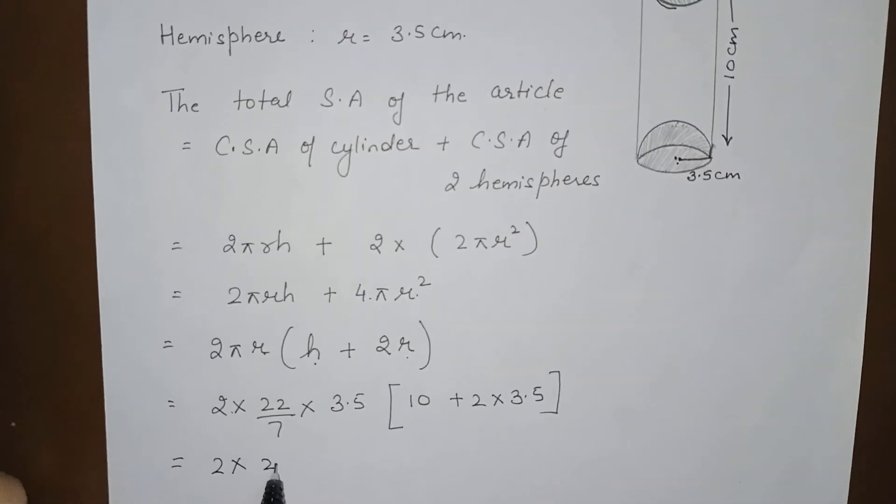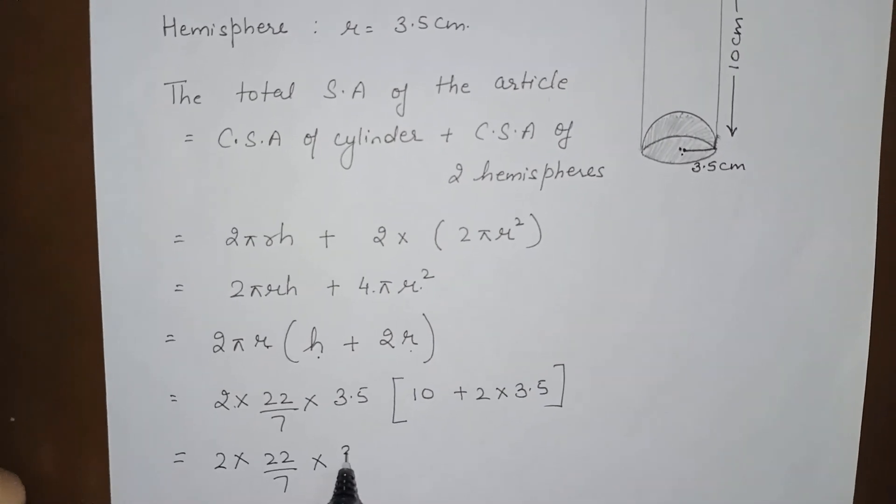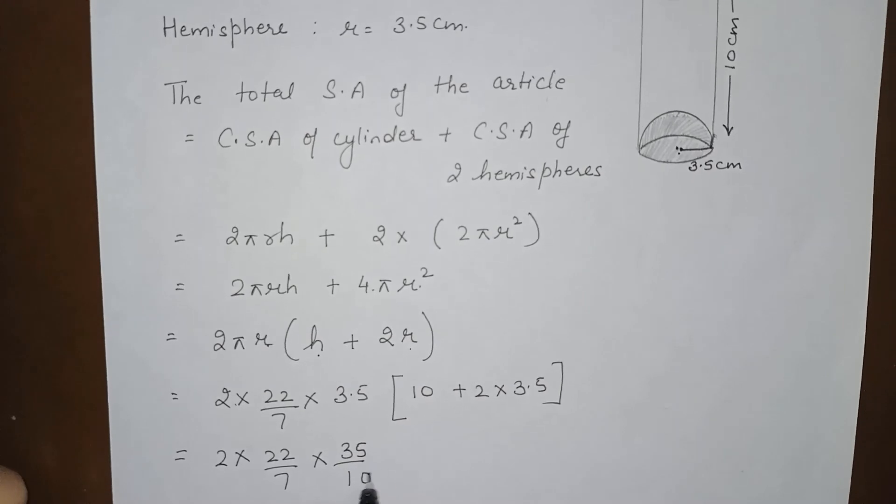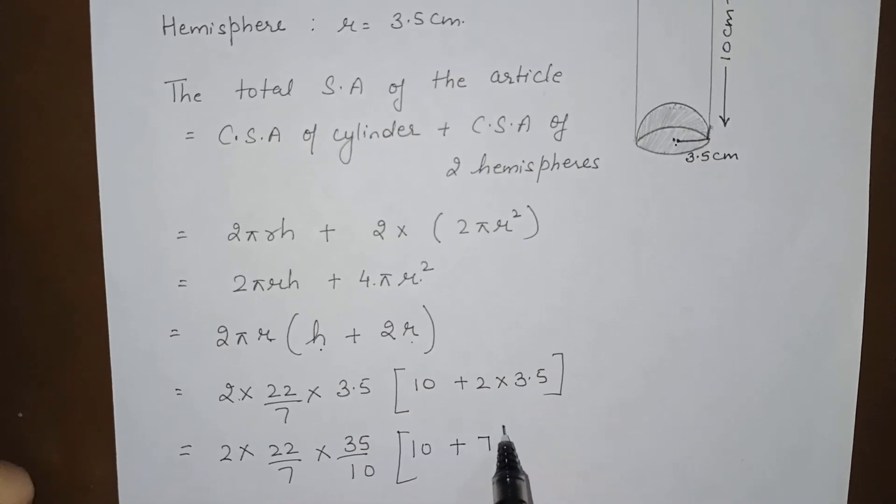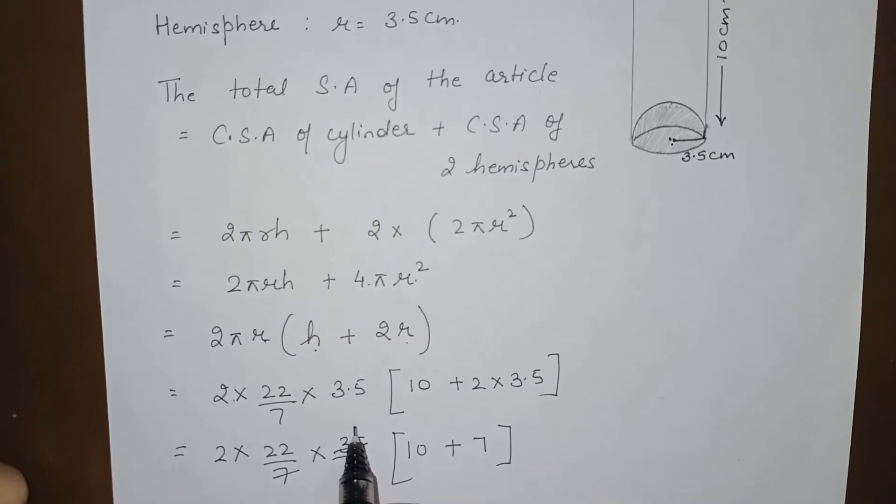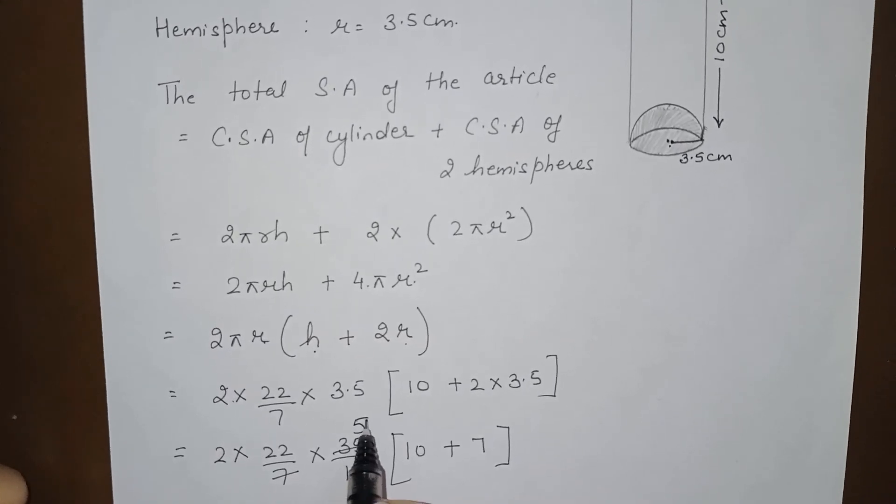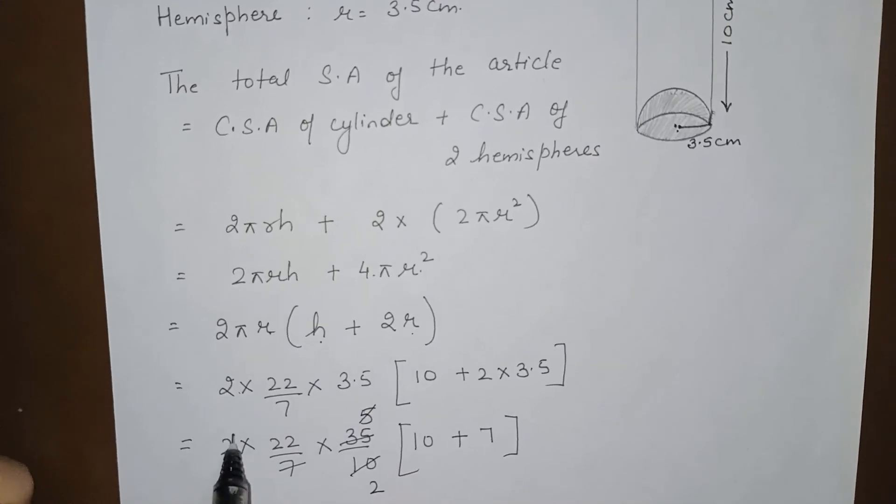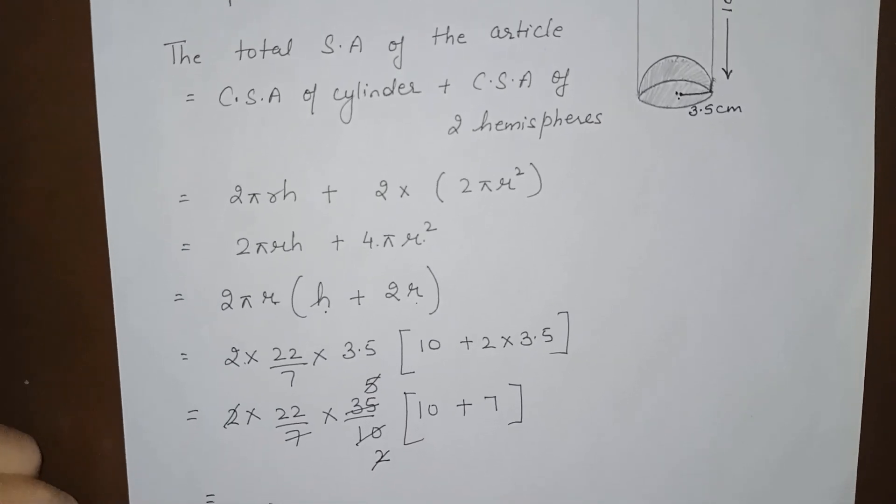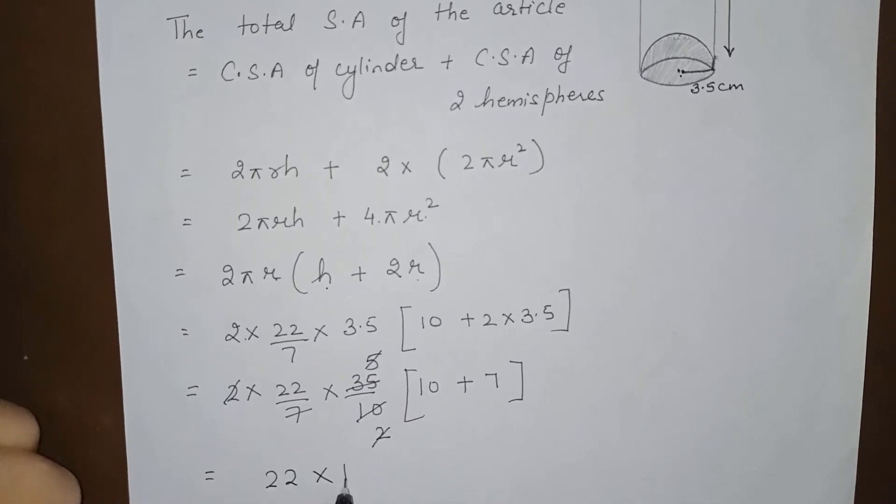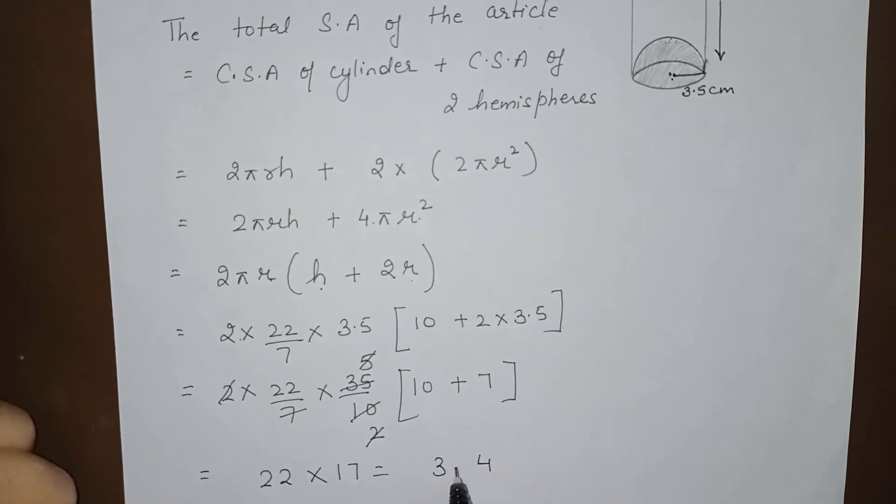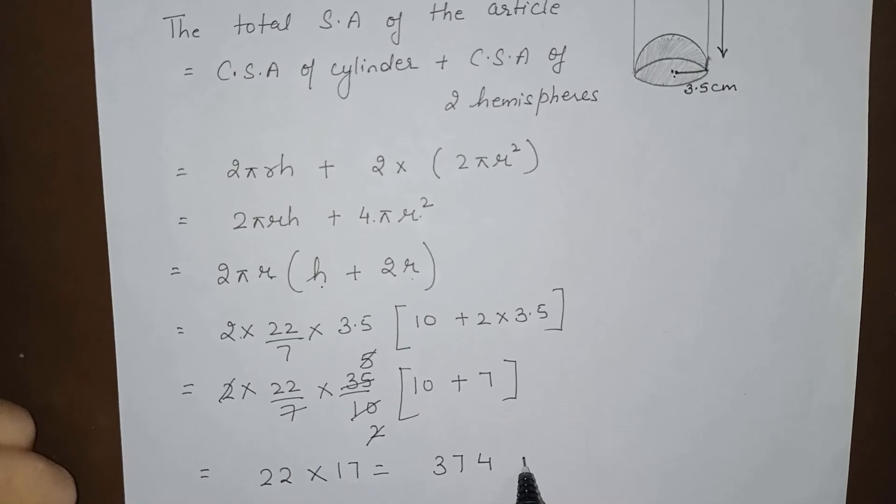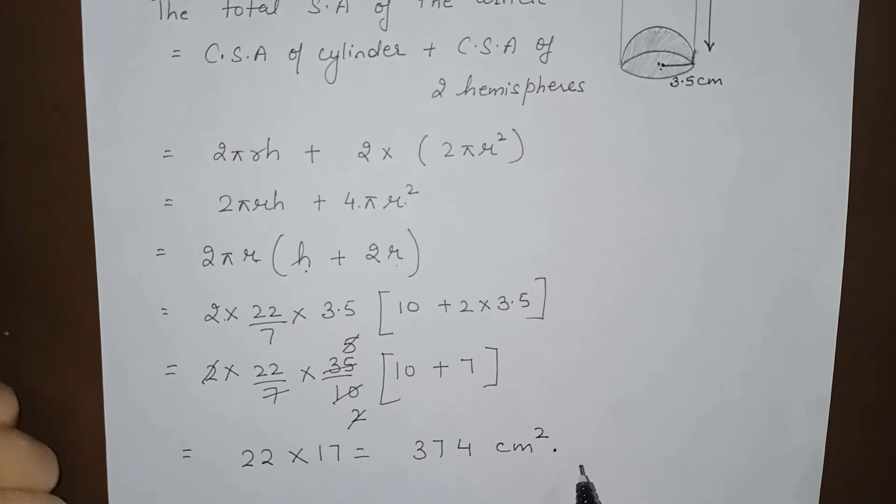This we can write as 5, this is 2, and this 2 goes with this 2. 22 into 17—374 centimeter square will be the answer.